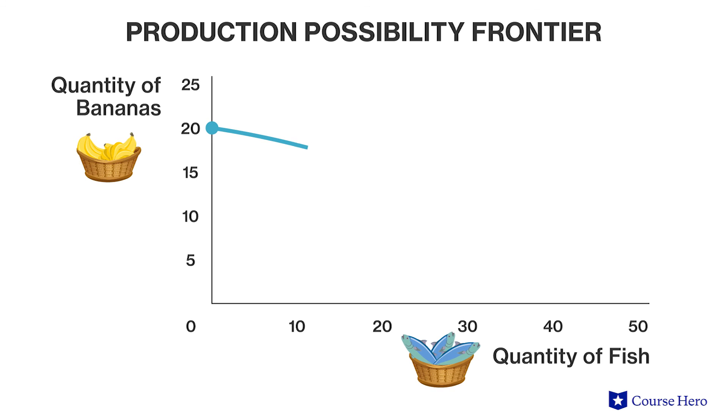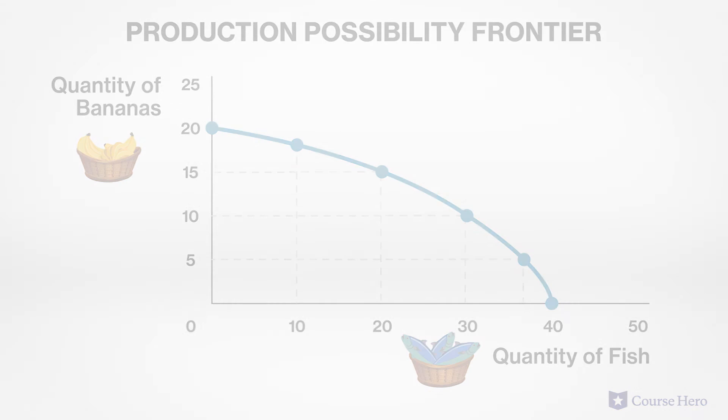Now, instead of a straight line, Jerry's production possibilities frontier is a curved line, which illustrates increasing opportunity cost.